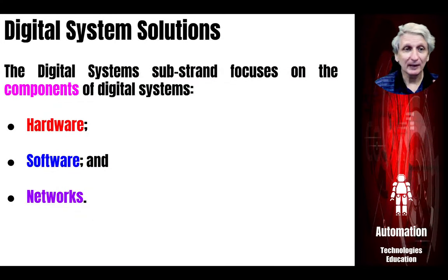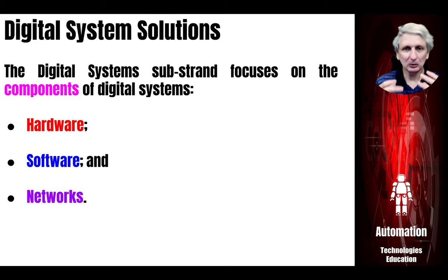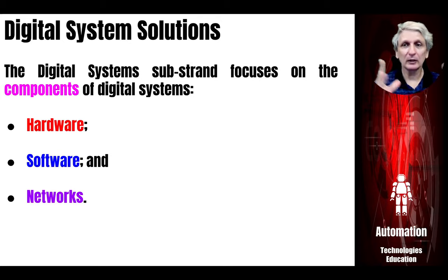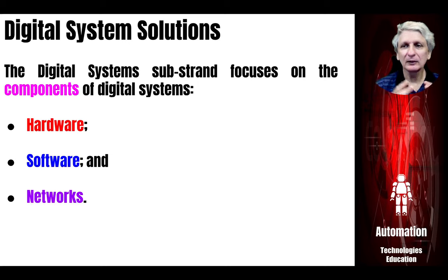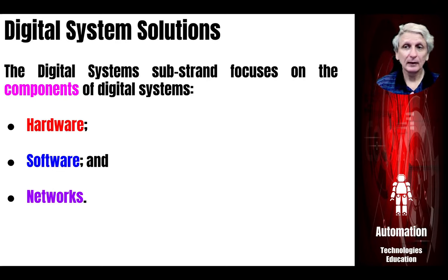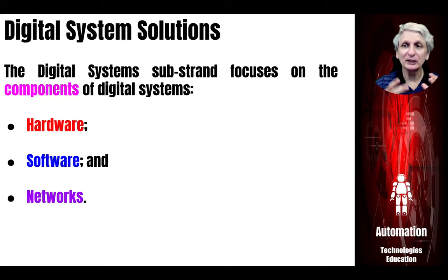Students need to learn about the components of digital systems — the various hardware that makes up the systems, like a computer, but also peripherals such as the mouse, keyboard, monitor, printer, or scanner. There are also mobile computers: laptops, tablets, and mobile phones. They are all different devices and often have some of these other elements integrated into them. There's also a wide range of other digital devices — most cameras now are digital, and there are many digital musical instruments.